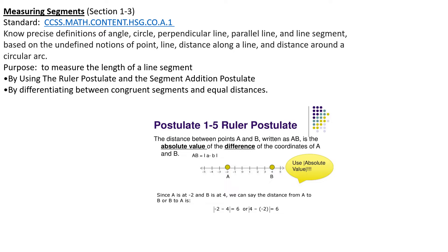Here we have Postulate 1-5, which is the Ruler Postulate. It states that the distance between points A and B, written as AB, is the absolute value of the difference of the coordinates of A and B. Since A is at negative 2 and B is at 4, you take the difference and then its absolute value. Negative 2 minus 4 is negative 6, but its absolute value is positive 6. Likewise, 4 minus negative 2 is positive 6, and its absolute value is positive 6.